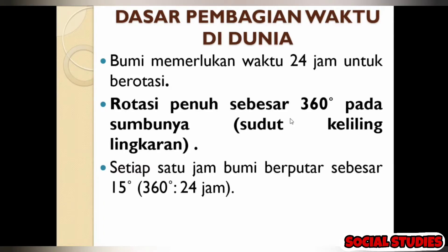Jadi setiap 1 jam bumi itu berputar 15 derajat, anak-anak. Memang tidak terasa bumi berputar, tapi kita bisa melihat ada matahari, ada siang dan malam. Kamu lihat pandang di langit — langitnya berbeda, awannya berputar. Jadi di situ menandakan bahwa bumi itu berputar. Jadi 15 derajat didapat dari 360 dibagi 24 jam.